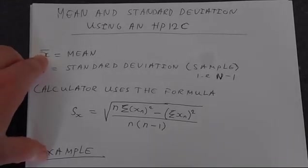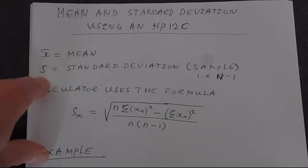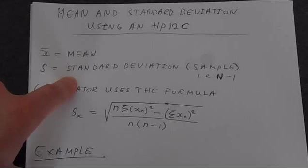And so for this, we've got the following notation. X with the bar on the top is going to be the mean, and the letter S is going to just be our standard deviation.